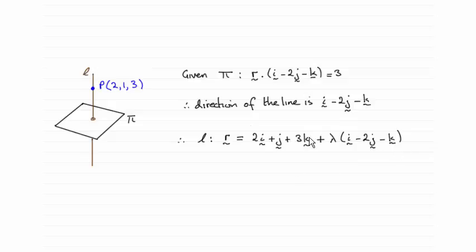Briefly though, remember this part of the equation represents the position vector of a point on the line. We were told that the line went through point P with coordinates 2, 1, 3.